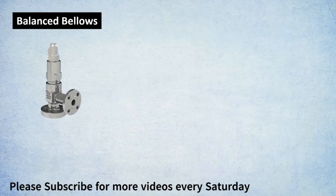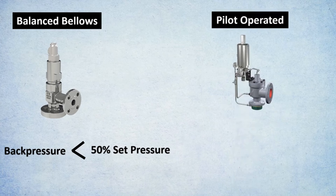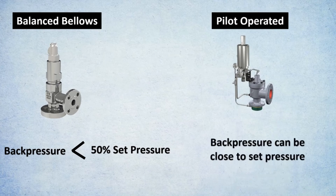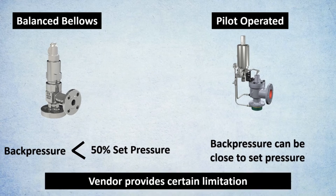For a balanced bellows relief valve, the back pressure should be less than 50 percent of the set pressure. For pilot operated relief valves, the back pressure can be close to the set pressure — theoretically up to 100 percent, though vendors will provide certain limitations. Whenever the back pressure is greater than 50 percent, you must go with a pilot operated relief valve.